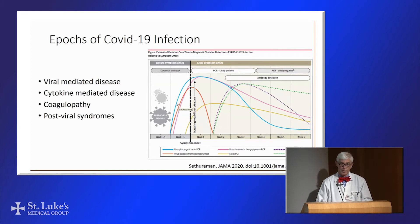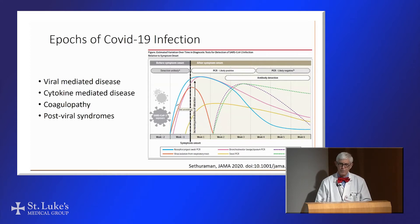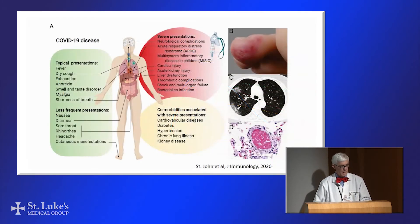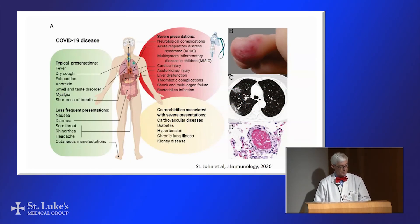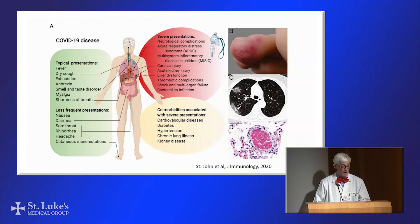Then the virus goes away and most people get better. However, there are groups of people who do not get better, in which the immune system not only fights the virus but goes into overdrive and begins to fight itself. Early on in the infection, you typically have pulmonary symptoms — fever, cough, fatigue, and exhaustion — just like having the flu or many other viral infections.